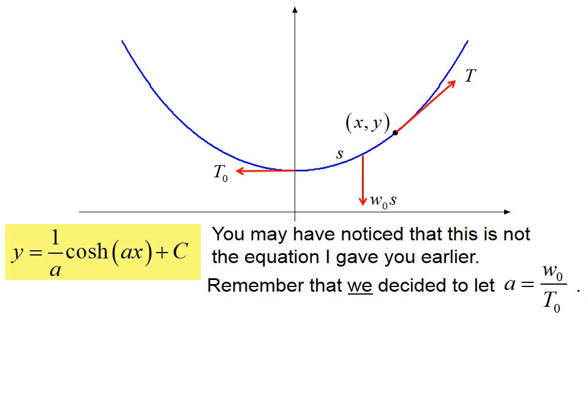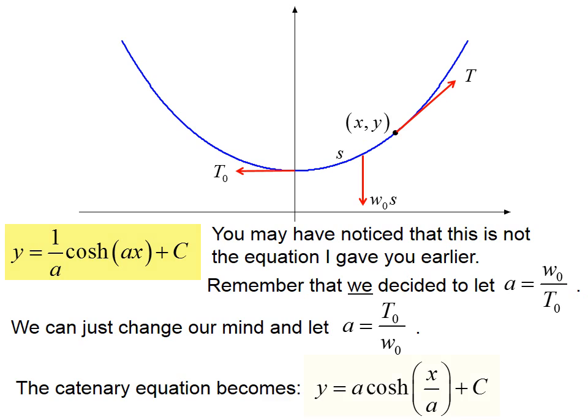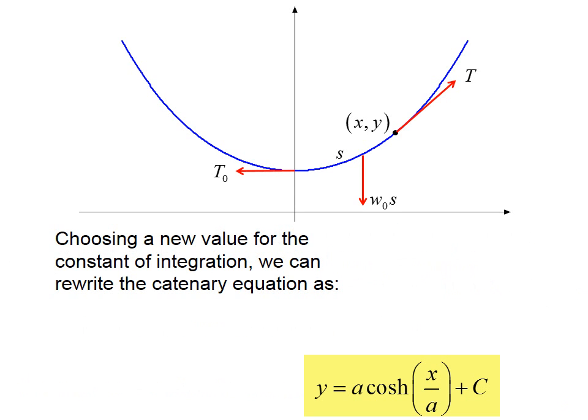You may have noticed that this is not the equation I gave you earlier. Remember that we decided to let a equals w sub zero over t sub zero. We can just change our mind and let a equals t sub zero over w sub zero. And the catenary equation becomes y equals a cosh x over a plus c. Choosing a new value for the constant of integration, we can rewrite the catenary equation as y equals b plus a cosh x over a.